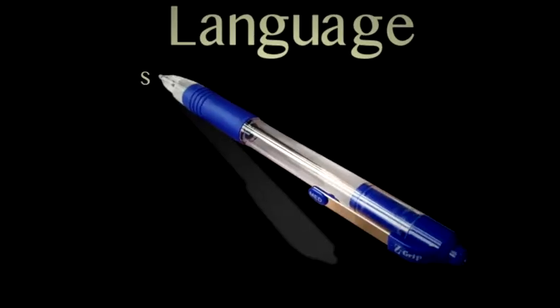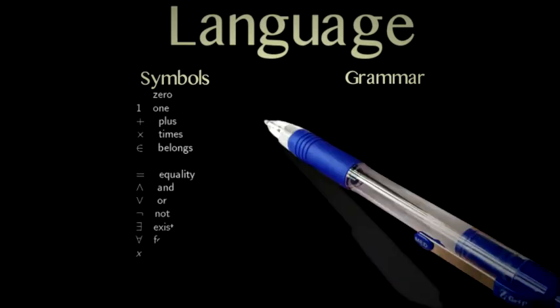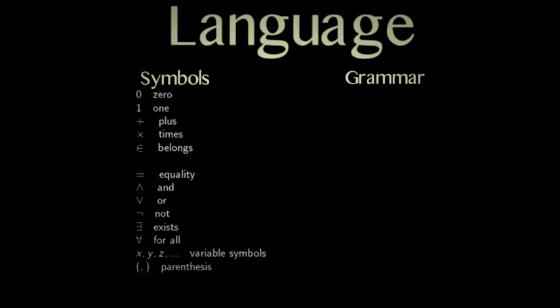Language. To define a language, we need symbols. They are like the letters of the alphabet. And grammatical rules that tell us how to put these symbols together. Here is a standard list of symbols. The first symbols, 0, 1, plus, times, belongs to, form what is called a vocabulary. You can change them for some other symbols. The latter ones, equality, and, or, not, exists, for all, the variable symbols and the parentheses are called the logical symbols. They are essentially fixed in all first order logic. You can modify them slightly. For instance, you can add the implication symbol because you can define it from the others. But essentially, these are the logical symbols.